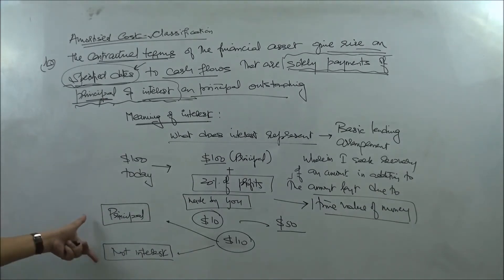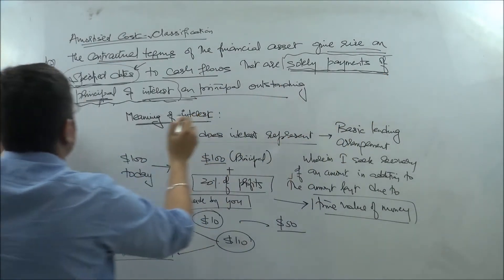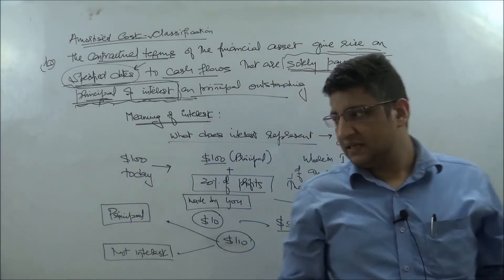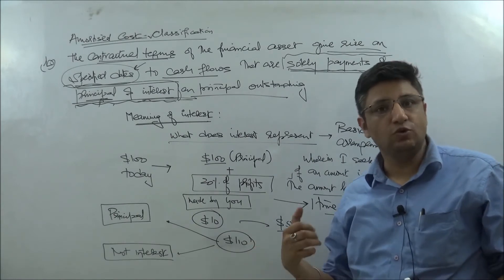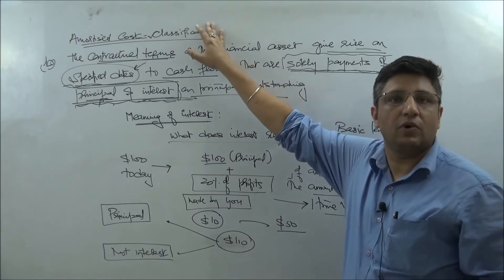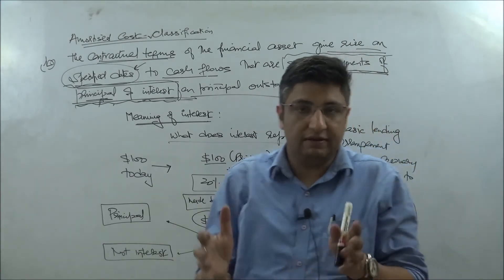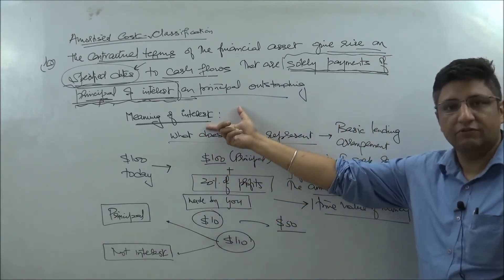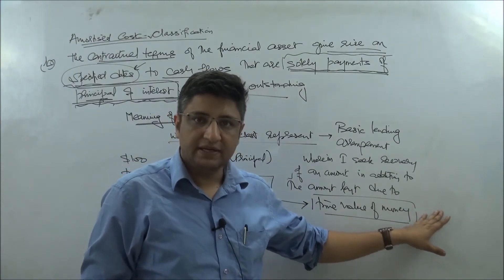But if I say I give you $100 today and you return $100 principal plus 20% of the profits made by you - let's say if you made a profit of $50, my share is $10. Now this $110, while it has the principal amount recovery, I did not receive interest from you. That is one differentiation. This condition of solely payment of principal and interest suddenly becomes very complicated because I cannot probably recover anything other than principal and interest. All of a sudden you start witnessing - I don't only want to recover my principal but also interest. So it's important for me to understand what is the meaning of interest here. Interest broadly refers to the time value of money.